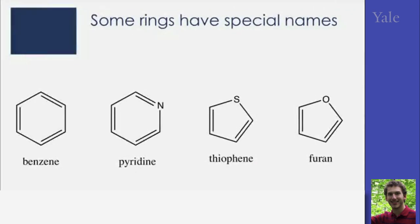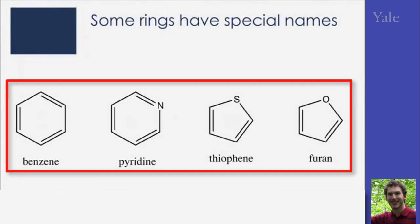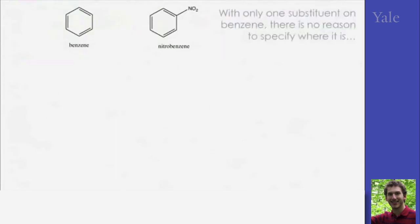Some rings have special names, benzene, pyridine, thiophene, furan, and these are included in the names as well. When you only have one substituent on benzene, you don't need to specify where it is. Again, rotation makes all the different ones about the same. So we have benzene and nitrobenzene.